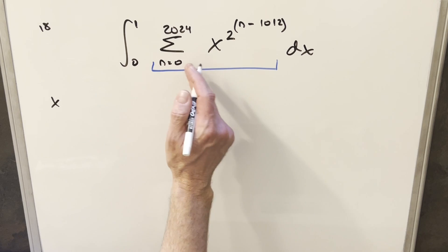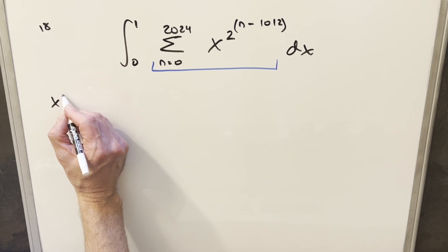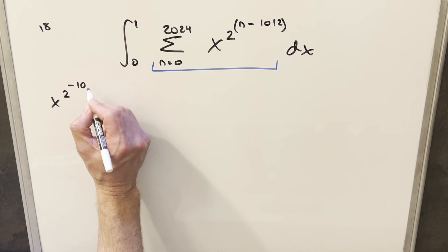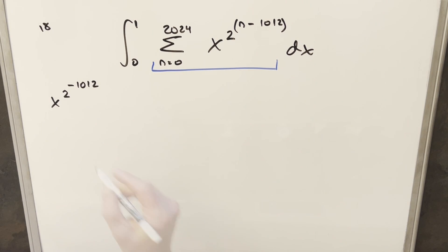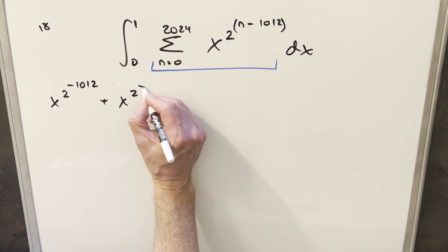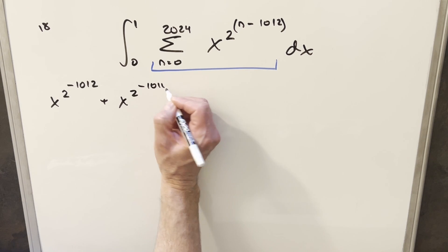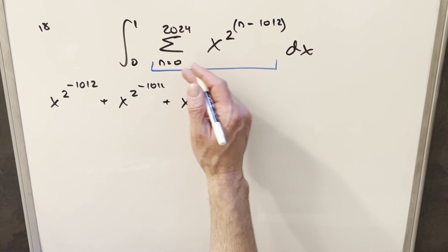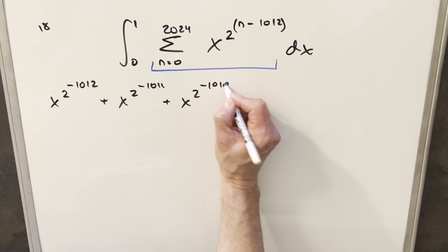So for this first term, if I plug 0 in here, this is going to be x to the 2 to the 0 minus 1012. This is going to be minus 1012. Then for the next term, when we have n equal to 1, we're going to have x to the 2 minus 1011. Then I'll do one more. When n equals 2, we'll have x to the 2 to the minus 1010 here.